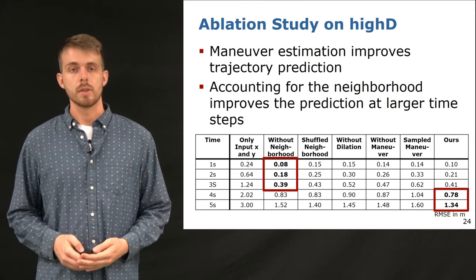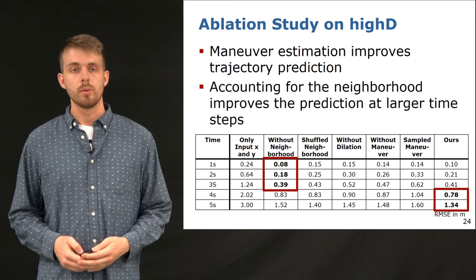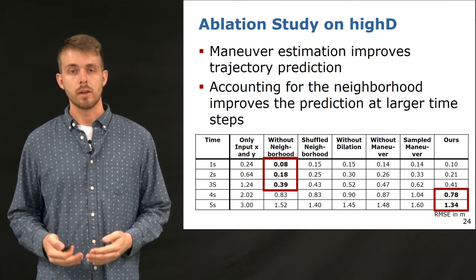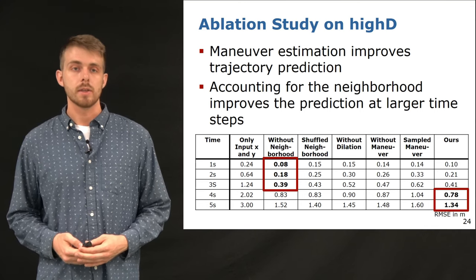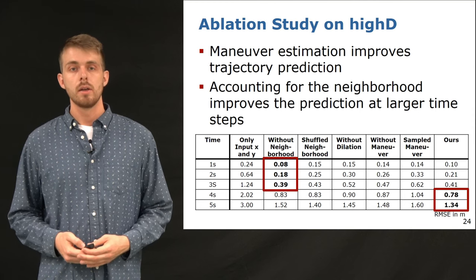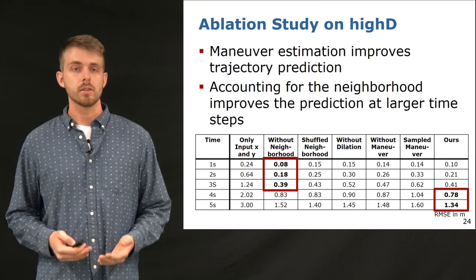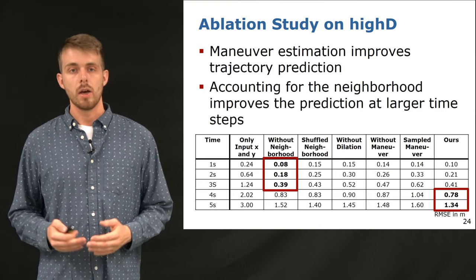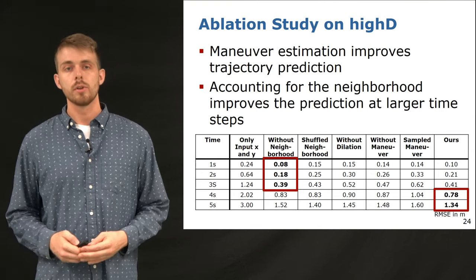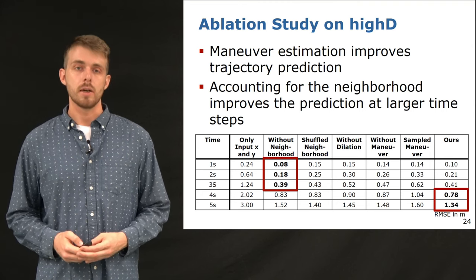If no neighborhood around the target car is considered, the performance improves for earlier time steps. We hypothesize that for a short time horizon, the future trajectory of the target mainly depends on the sparse states and less on the neighboring cars. For larger time steps, we see a clear improvement by considering the neighborhood around the target vehicle.